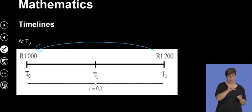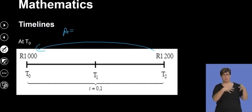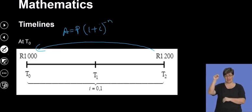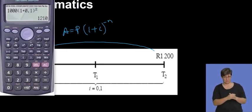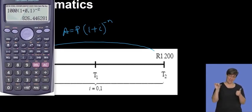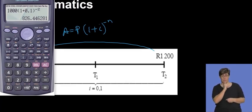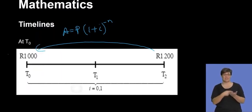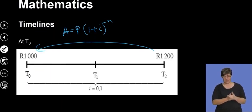At t0, we are moving backward. When moving backward, we use the same formula but with a negative exponent: (1 + i)^(-n). On the calculator, using negative n, we find the R1 200 was actually worth R826.45 two years back. So R1 200 in two years is equivalent to approximately R826.45 today — that is what moving backwards on a timeline means.